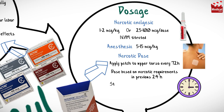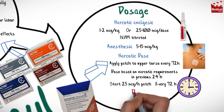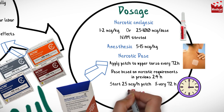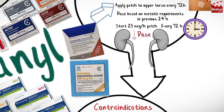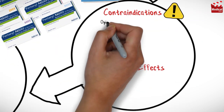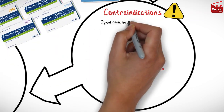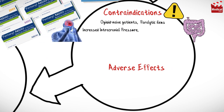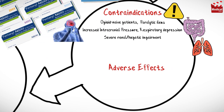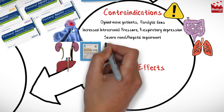Start with a 25 micrograms per hour patch every 72 hours. The dose should be decreased in cases of renal impairment. Fentanyl is contraindicated in opioid-naive patients, paralytic ileus, increased intracranial pressure, respiratory depression, and severe renal or hepatic impairment.